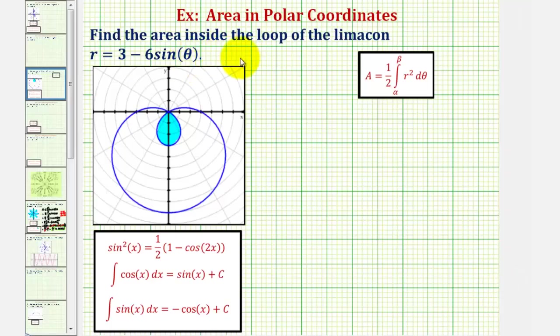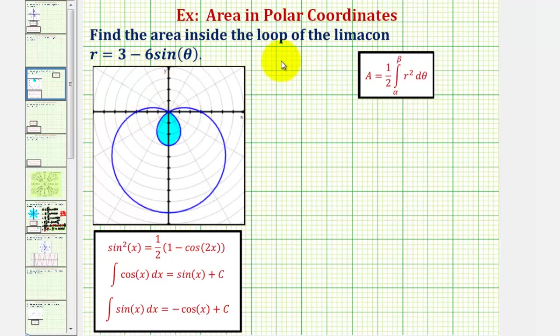We want to find the area inside the loop of the limaçon given by the equation r equals three minus six sine theta, graphed here in blue. Our goal is to find the area of this inner loop, the shaded region shown.